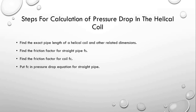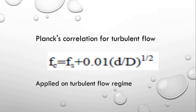Let us discuss the various correlations used to determine the friction factor in the helical coil. I am only discussing turbulent flow here; relations for laminar and transition flow are discussed in further lectures. The first is the Plantz correlation for turbulent flow. Here, Fc is the friction factor for the coil, Fs is the friction factor for the straight pipe, D is the mean diameter, and d is the inner diameter of the coil. This equation is only applied in the turbulent flow regime and cannot be applied in laminar or transition flow.